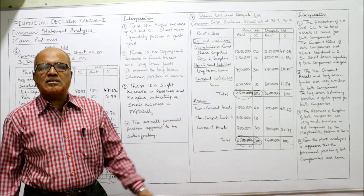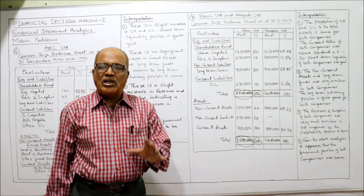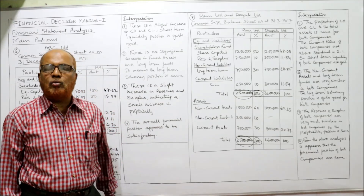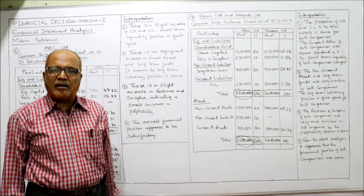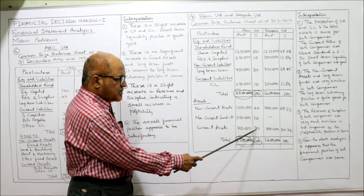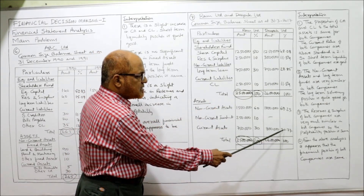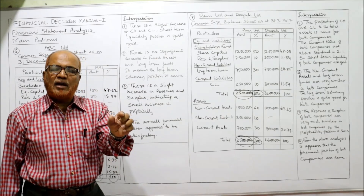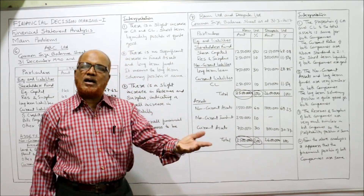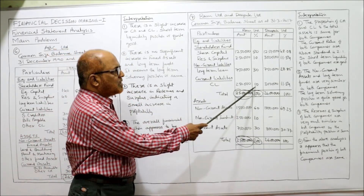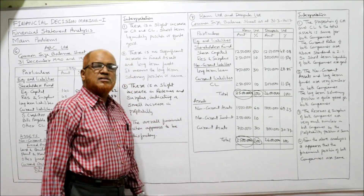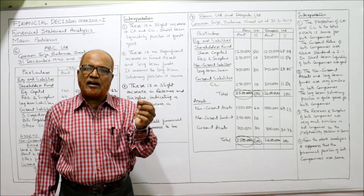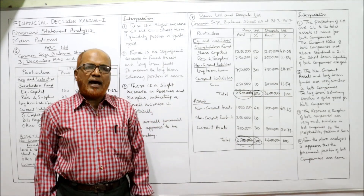That completes the common size balance sheet. Now for the interpretation: first, regarding short-term liquidity position by comparing current assets and current liabilities. Ram Limited current assets are 30% and Deepak Limited current assets are 30.77% of total assets. Current liabilities are 10% for Ram Limited and 11.54% for Deepak Limited. There is a slight difference in current assets and current liabilities between the two companies.